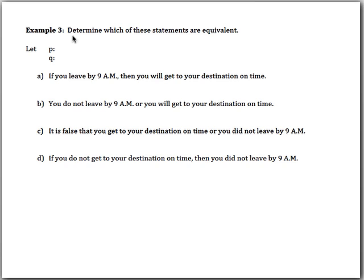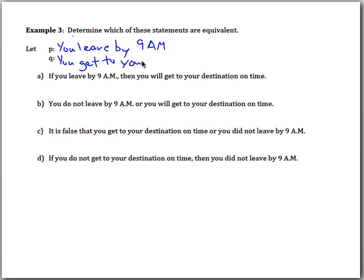For example three, we want to determine which of four statements are equivalent — which ones are saying the same things. We're going to let P be 'you leave by 9 a.m.' and Q be 'you get to your destination on time.'